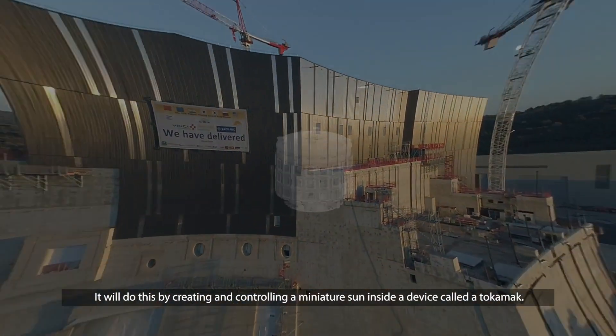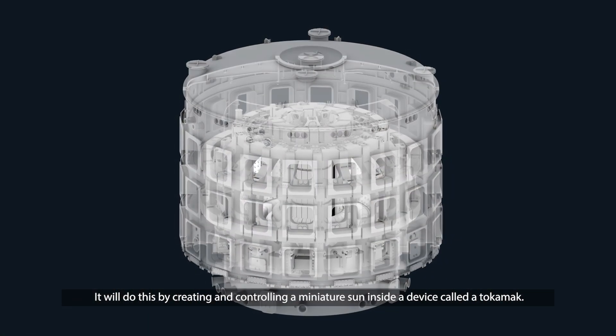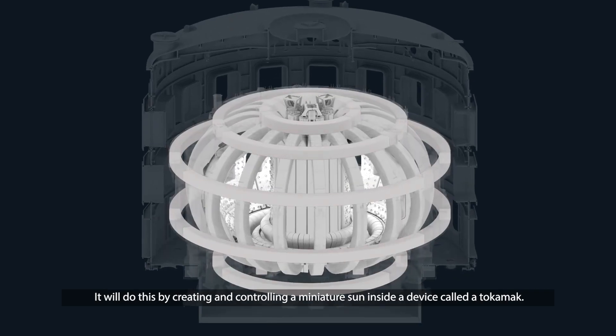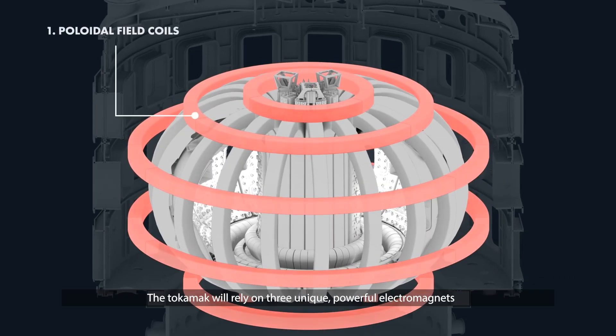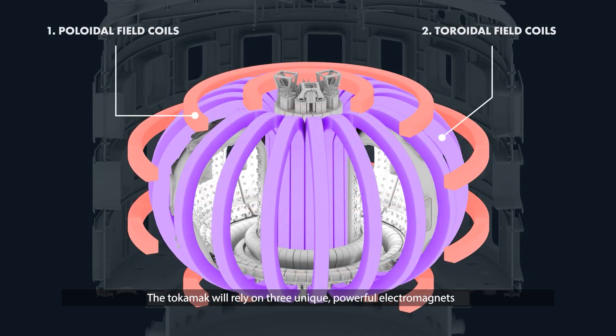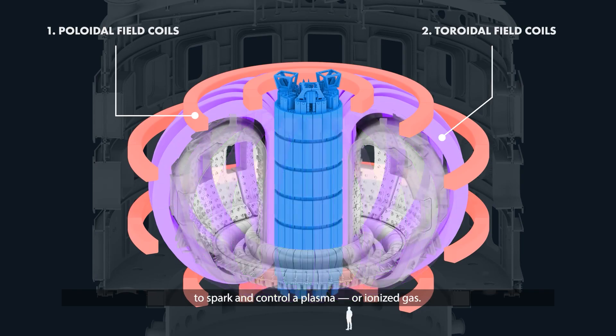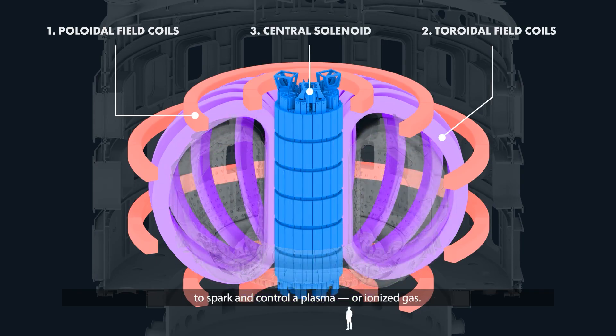It will do this by creating and controlling a miniature Sun inside a device called a tokamak. The tokamak will rely on three unique, powerful electromagnets to spark and control a plasma or ionized gas.